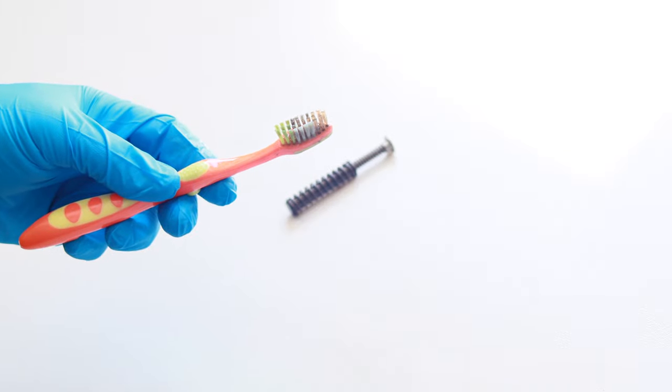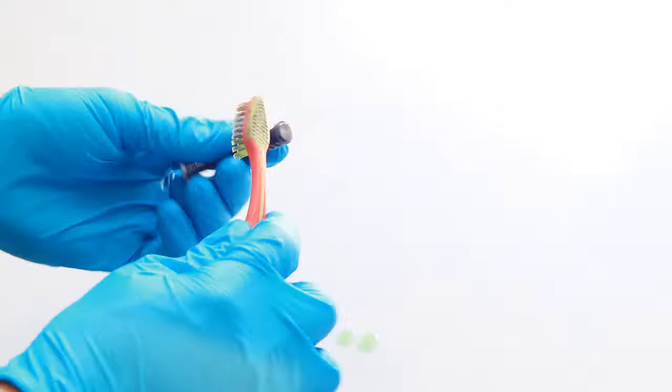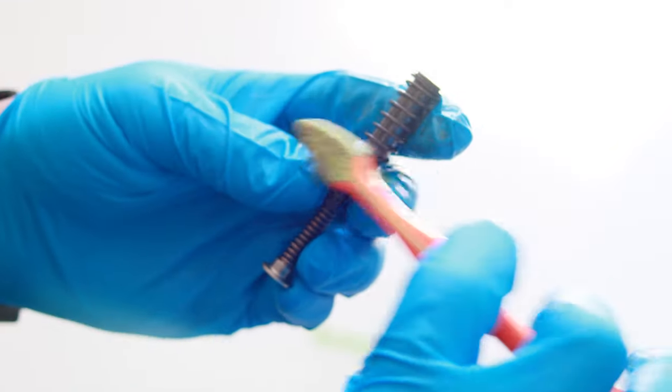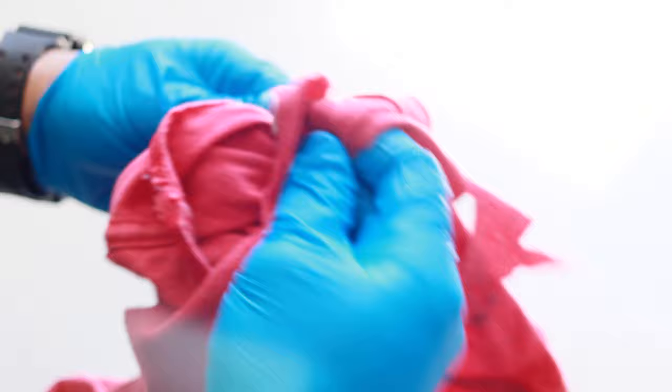Now let's move on to the recoil spring. Add CLP to your nylon brush and scrub everything. It should only take a minute or two. When you're done scrubbing it, wipe it off with a clean rag and you're done.